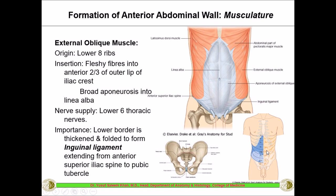The nerve supply of the external oblique — as with all muscles of the anterior abdominal wall — is from the lower six thoracic nerves: T7, T8, T10, T11, and T12. Some books mention the lower five thoracic and the subcostal nerve, where the subcostal is the 12th thoracic nerve, named so because it is below the costas (ribs).